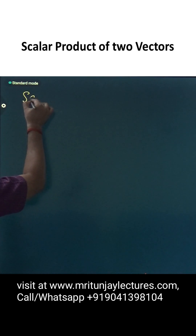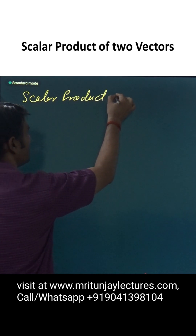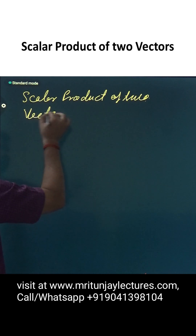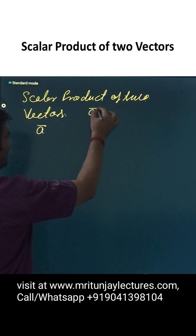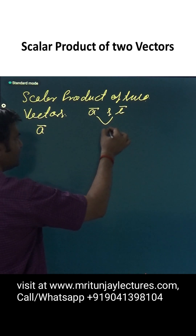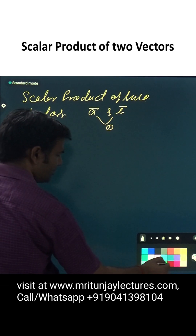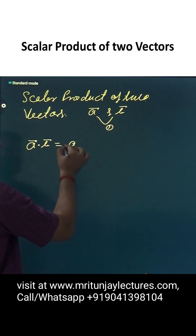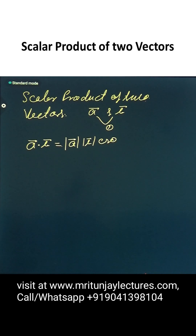Scalar product of two vectors — suppose vector a and vector b, and the angle between these two is theta. So, what about the scalar product of two vectors? The formula is a dot b, written as mod a, mod b into cos theta. This is the formula.